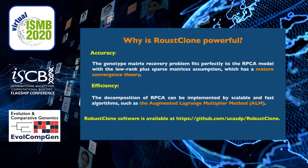So why can RobustClone be powerful? First, for accuracy, the genotype matrix recovery problem fits perfectly to the RPCA framework, with the low-rank plus sparse matrices assumption, which has a mature convergence theory. Second, the decomposition of RPCA can be implemented by scalable and fast algorithms, such as the augmented Lagrangian multiplier method, which makes RobustClone more efficient.